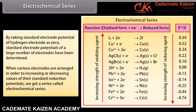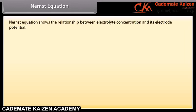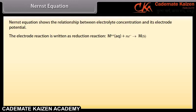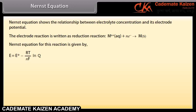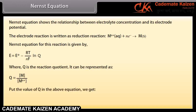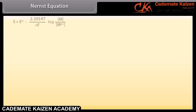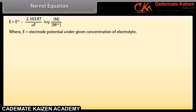Standard hydrogen electrode (SHE): It consists of a platinum electrode with platinum black, immersed in an acid solution having 1 M concentration of hydrogen ion. Pure hydrogen gas at a pressure of one atmosphere is bubbled over the platinum electrode at 298 K. The platinum electrode is inert; the half reaction takes place at its surface. The hydrogen electrode can act as anode or cathode depending upon the nature of the second electrode with which it is combined. The electrode potential of the standard hydrogen electrode is taken as zero.